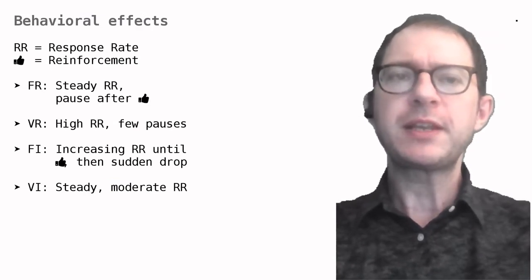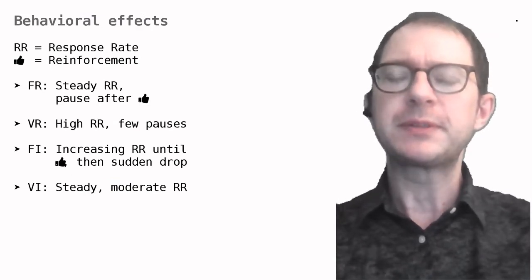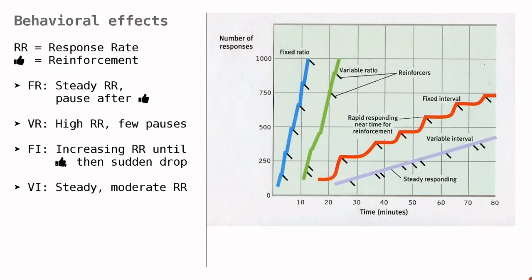Schedules are important because they cause different patterns of behavior. This kind of graph is called a cumulative record. It is another invention by Skinner and it shows how many responses are performed as a function of time. A steep line means more responses. Let's start from the fixed ratio schedule here in blue. We see steady responding means that the slope of the line is pretty much constant and in real life we also see a pause after every reinforcement.